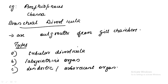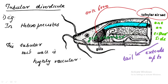Branchial diverticula are outgrowths of the gill chambers — the space where the gill slits and gill arches are located. The different types of branchial diverticula are: tubular diverticula, labyrinthine organ, and dendritic or arborescent organ. The tubular diverticula, as the name suggests, are in the form of a tube. This type of accessory respiratory organ is found in the eel-like fish.